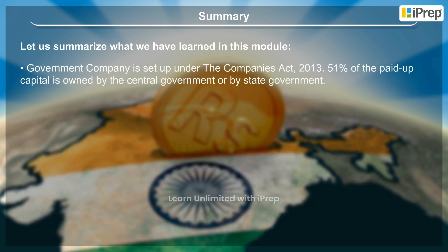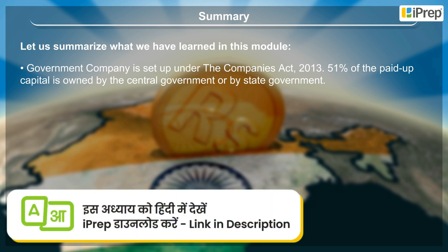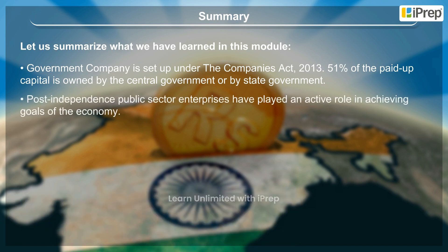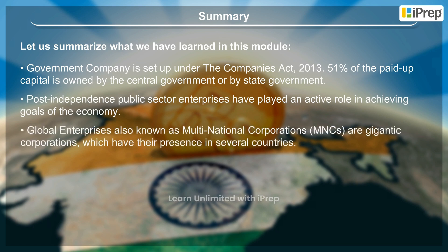Statutory corporations have some flexibility over private enterprises. A government company is set up under the Companies Act 2013, where 51 percent of the paid-up capital is owned by the central government or by state government. Post-independence, public sector enterprises have played an active role in achieving the goals of the economy.